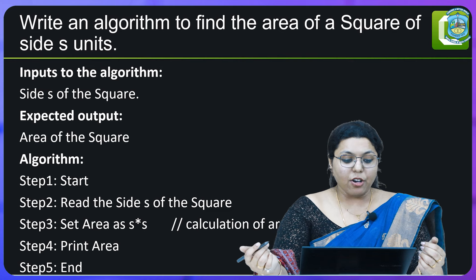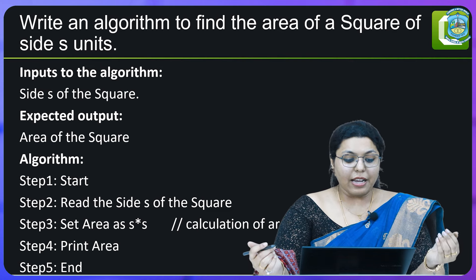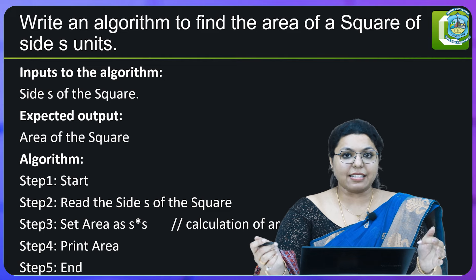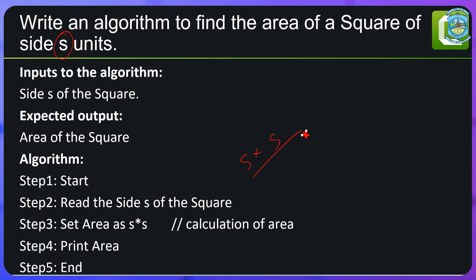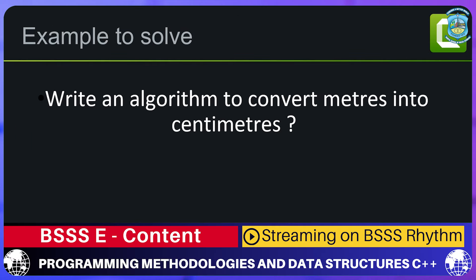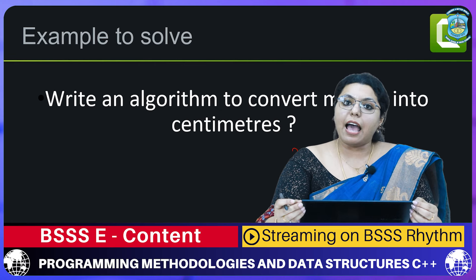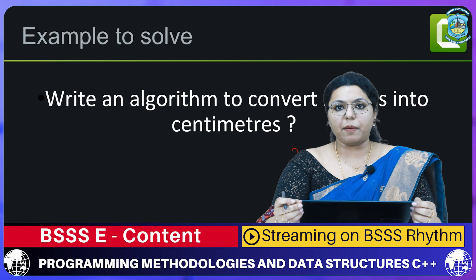Another example of an algorithm: write an algorithm to find the area of a square of side s. Step 1 — read the size of the square as s; Step 2 — set area as s × s; Step 3 — print area; then end. Here is an exercise for you all: write an algorithm to convert meters into centimeters. From the next lecture we will see flowcharts and further notations about C++ programming. Thank you.